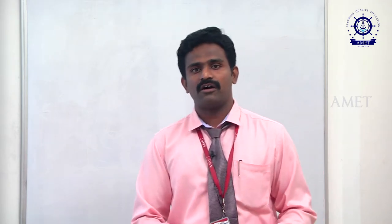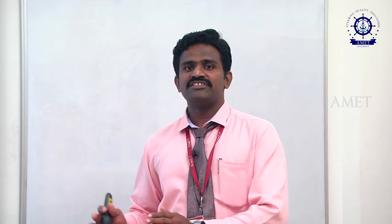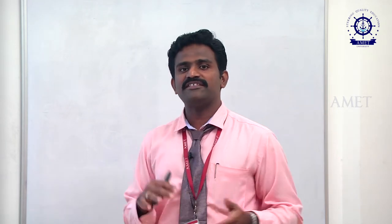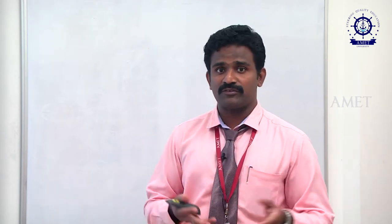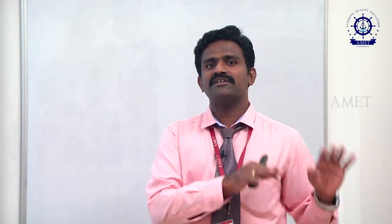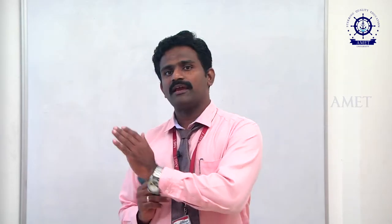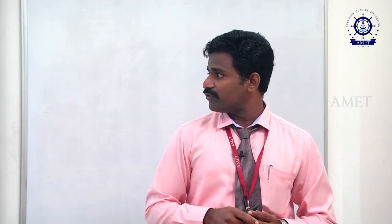Only under that condition will the emergency generator turn on. At all other times, it remains in a standstill condition. It is located outside the main and auxiliary machinery space. This is because we want the emergency generator to be in a very secure location — separate from the main switchboard — so that any power loss, fire accident, or unforeseen situation will not disturb it. It is located outside the main and auxiliary machinery space and not forward of the collision bulkhead.